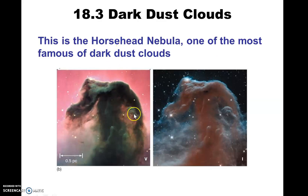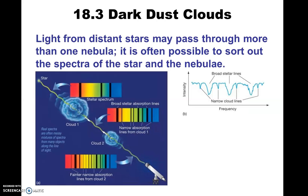This is the famous Horsehead Nebula. It's a dark region that happens to look like a horse's head, and that's how it got its name. There are different ones — the Spider Nebula, which of course looks kind of like a spider, and the Dumbbell Nebula. It's just famous because of the shape of a horse's head.